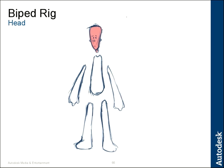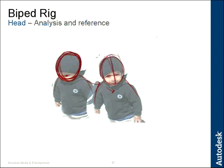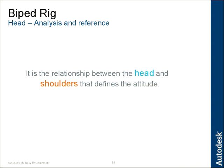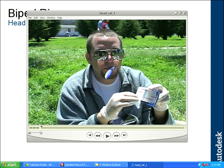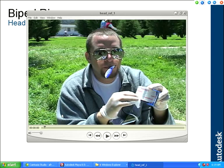So with the head, how do we determine what we need to be able to do? Same thing as everything else — we're going to look at reference and analyze motion and figure things out. While we're looking at the reference, keep something very important in mind: it's the relationship between the head and the shoulders that defines the attitude. Look at how the head works in conjunction with the shoulders, how they actually operate together, and see what is necessary to create the type of animation and believable emotional motion that we're going for.